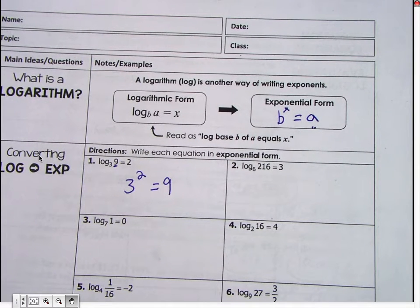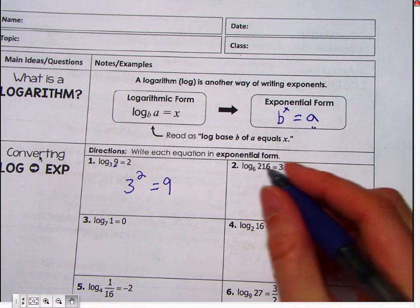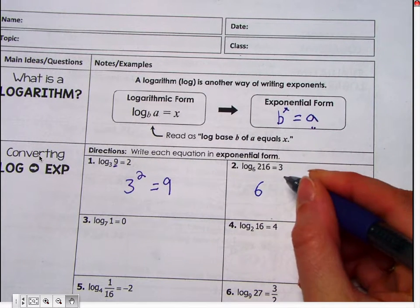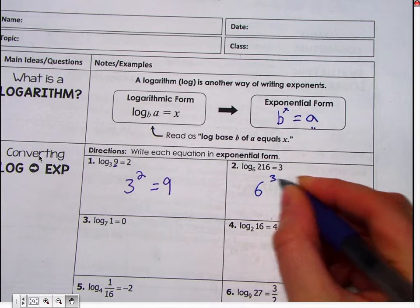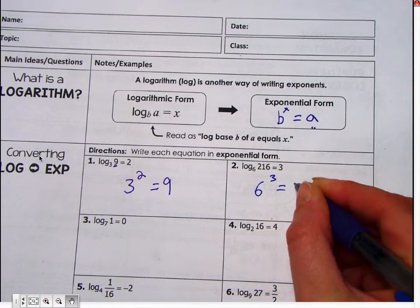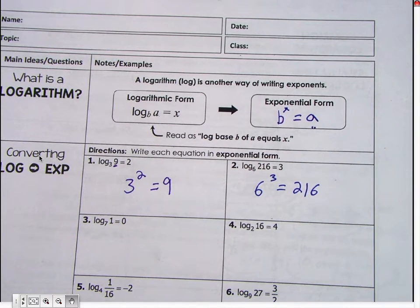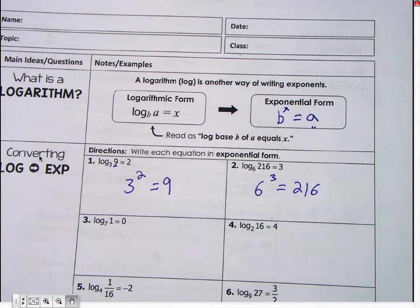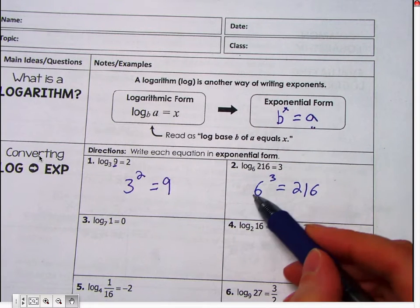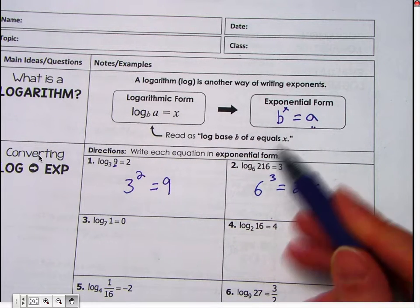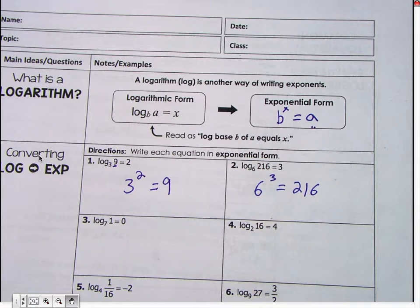All right. So number two, who would like to try it? Go ahead. Okay. Good. Perfect. Yep. You need to be able to go back and forth because sometimes you'll have to solve something. Like if one of these three things are missing, sometimes it's easier to do it exponentially. Sometimes it's easier to do it in a logarithm. So you need to be able to go back and forth.